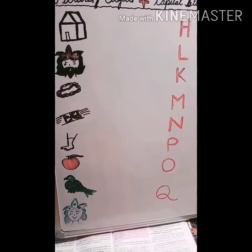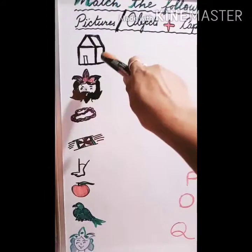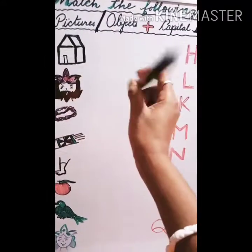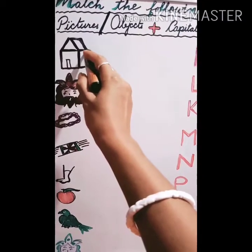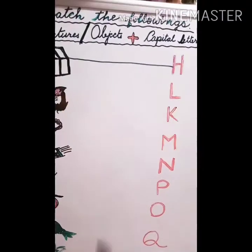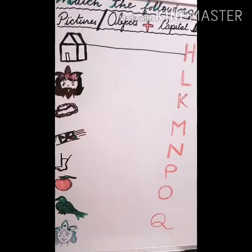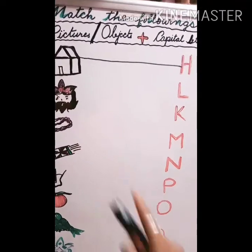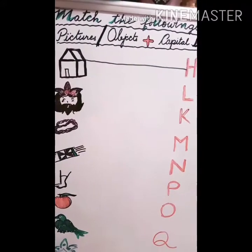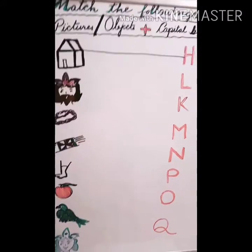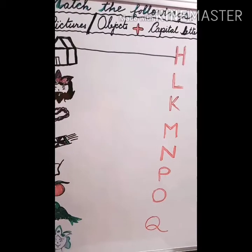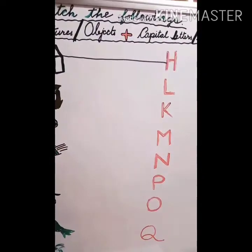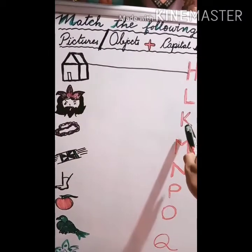Next picture is hut — H for hut. Try to join the line with a ruler or scale, right from the beginning. Teach them to join the line with the ruler or scale. Next picture is K for king. Find out K — where is K? Here.